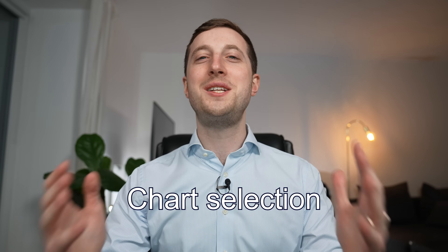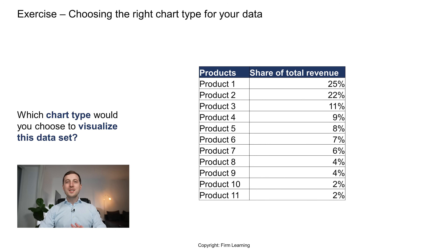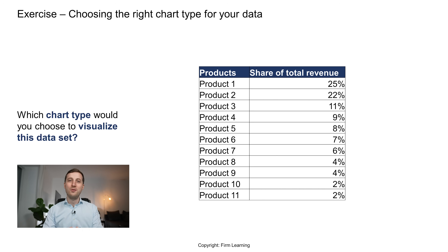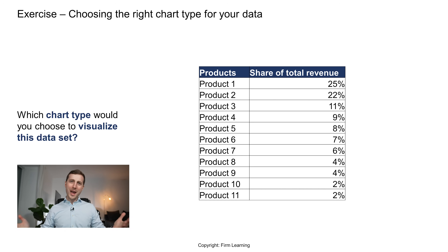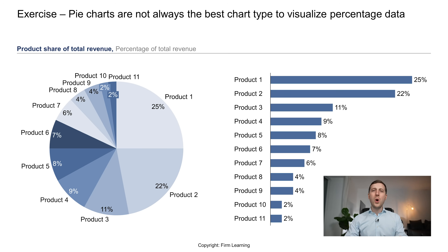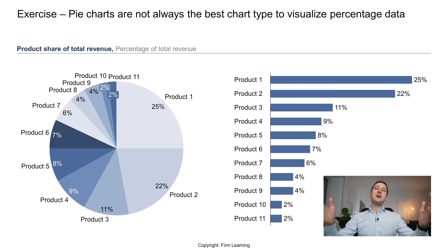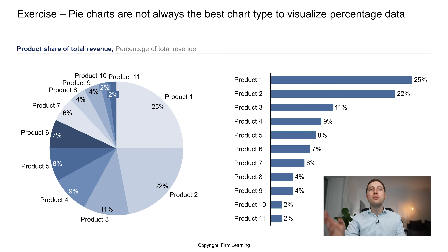Next, let's talk about choosing the right chart type for the data you want to visualize, because this is often more complicated than it might look. Here's a simple exercise: you see different products and how much revenue they contribute to total revenue — the sum is 100%. What chart type would you choose? The chart type people mention most frequently in this situation is a pie chart. But as you can see, this pie chart looks quite messy and overcrowded. The basic rule of thumb is that whenever you have more than about five elements, pie charts are quite difficult to work with.